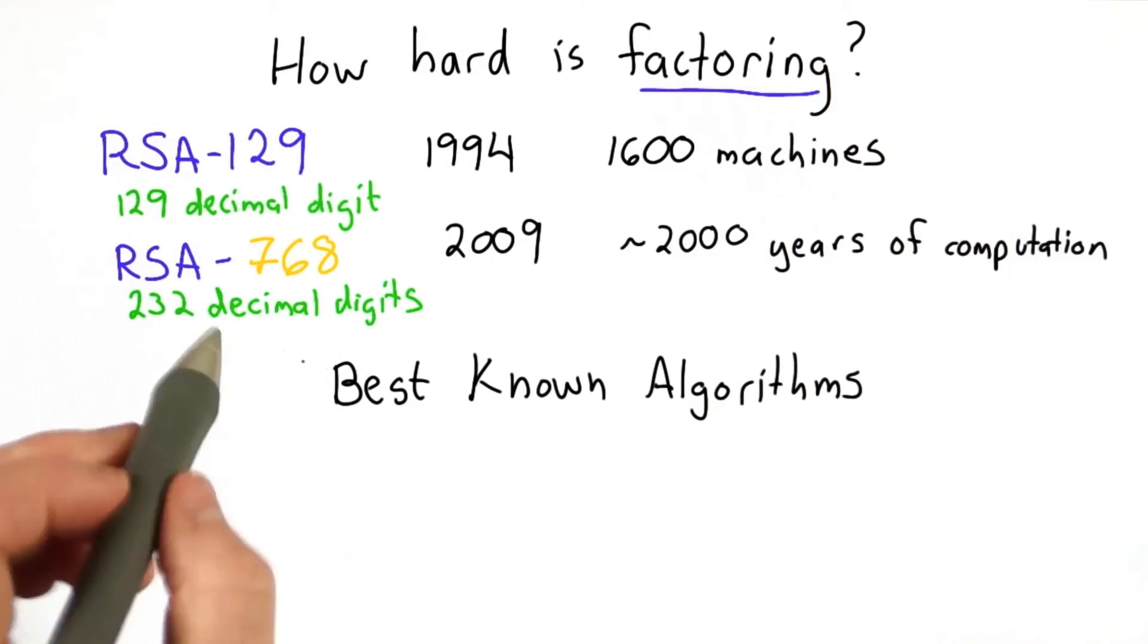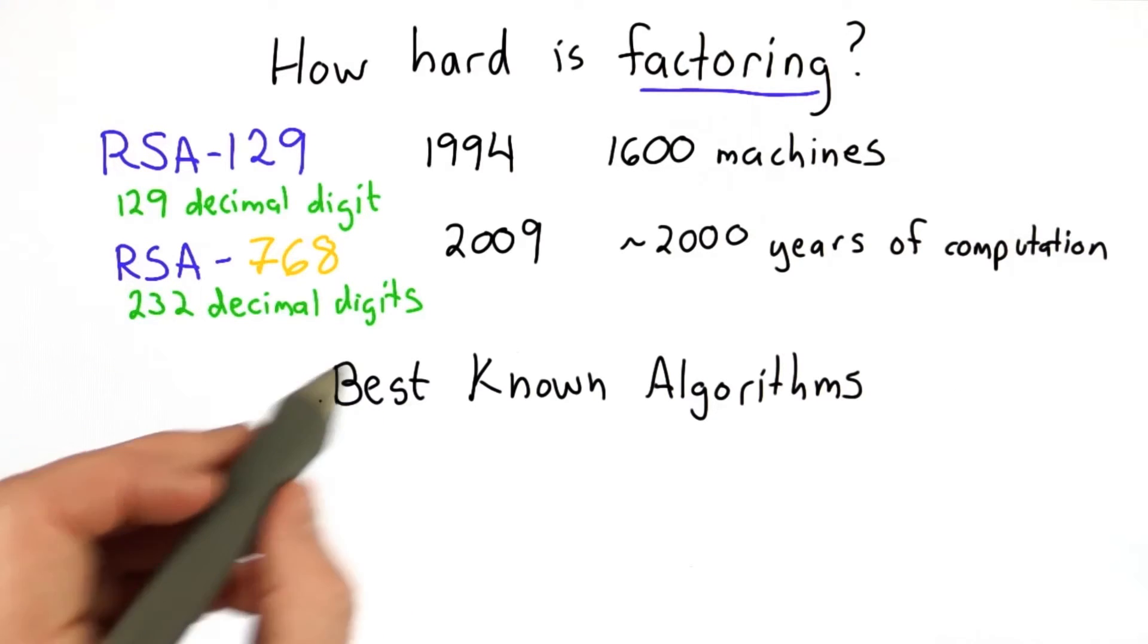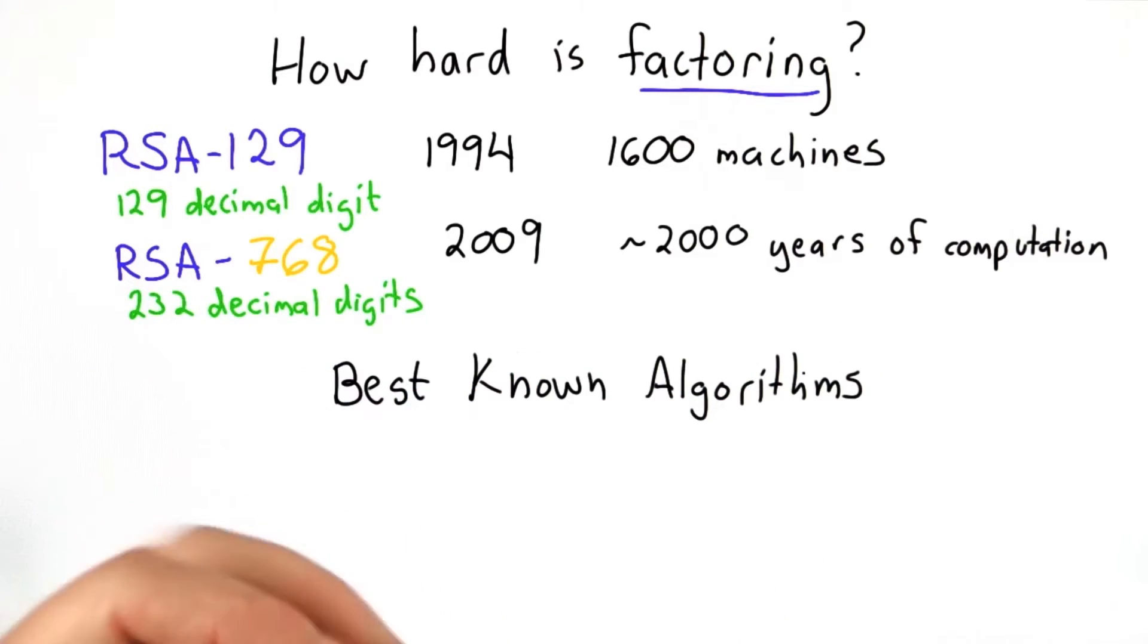We don't know any way to actually prove a problem like this is fundamentally hard. The best we can do is look at the best known algorithms and have some confidence, because people have worked very hard to find better algorithms and progress has been slow, that barring some very unexpected breakthrough, it won't get much faster. This is quite unsatisfying, but it's the best we can do.